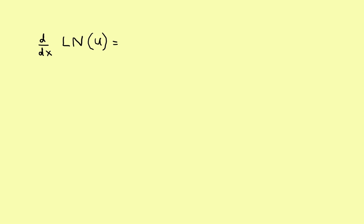Let's take a look at the derivatives of the natural log. The rule is fairly easy to use: the derivative of the natural log of u is 1 over the argument times the derivative of the argument. That's all it is. Before we try some examples, let's take a look at some of the rules for expanding natural logs.